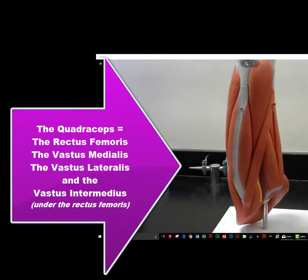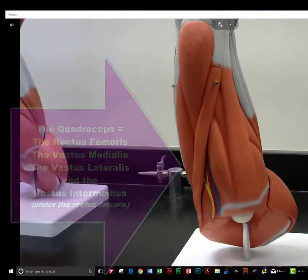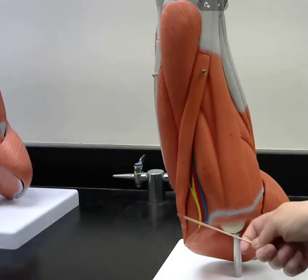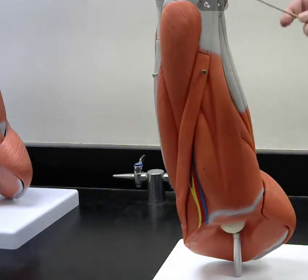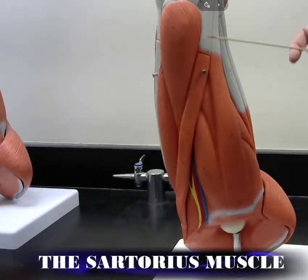Okay, let's turn slightly to the medial side. This strap-like muscle here is the sartorius. This is the sartorius muscle.